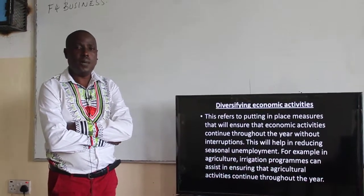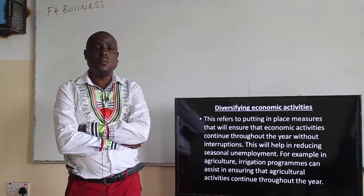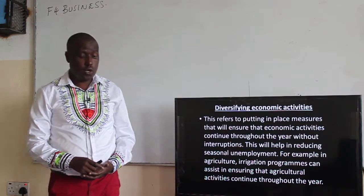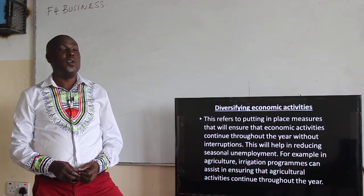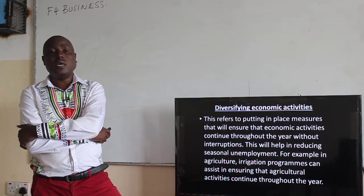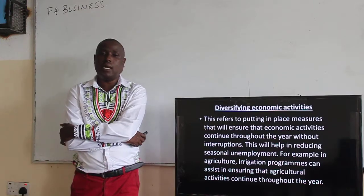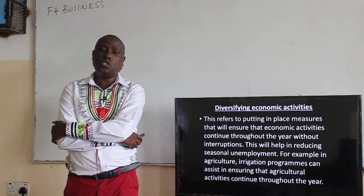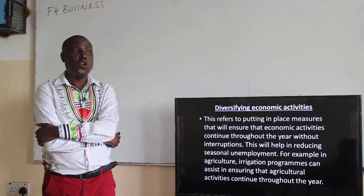Hello, and welcome back to our second part of the lesson. Here we are looking at how to control or correct unemployment. We can do it by diversifying economic activities. This refers to putting in place measures that will ensure that economic activities continue throughout the year without interruption.